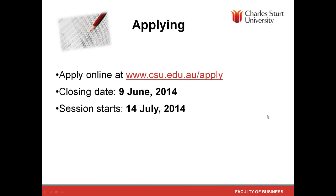You can apply online at www.csu.edu.au/apply. The closing date for applications is the 9th of June, so not long left — please don't bank on an extension. The session starts on the 14th of July. If you're in two minds, you can apply and start, then pull out before the census date — about four weeks into your subjects, around mid-August — without being liable for any subject fees.